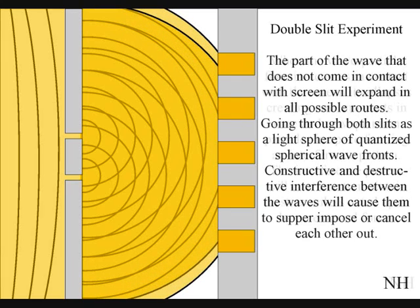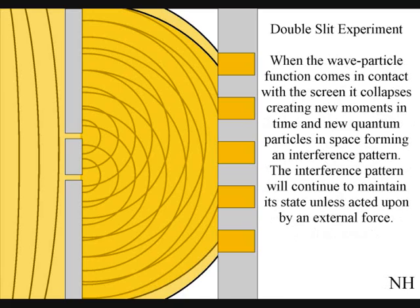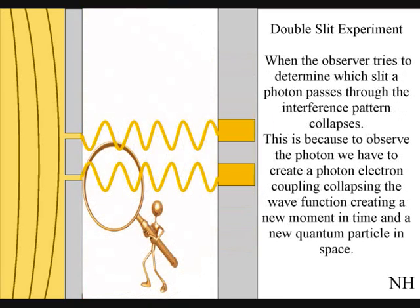When the observer turns on a detector to determine which slit a photon passes through, the interference pattern collapses. At that moment in time, the interference pattern will disappear, because to observe the photon, we have to physically create a photon-electron coupling, collapsing each wavefront into a new quantum particle that will have its own position in space and time that the wavefront never had before the collapse.